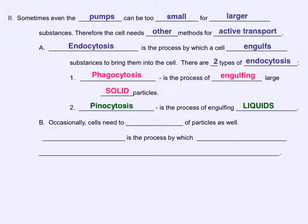Another type of endocytosis is called pinocytosis. This is the process of engulfing liquids. Think of the cell as drinking a liquid.